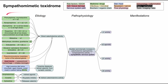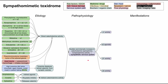So that's the etiology of sympathomimetic toxidrome — mostly drugs, some iatrogenic, some drugs of abuse, but there are other etiologies worth knowing as well. Now let's go into the manifestations, organized as best we can according to receptor type.